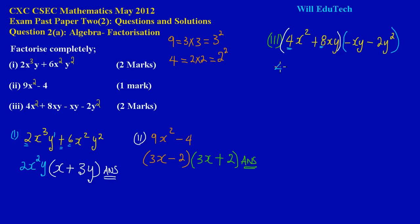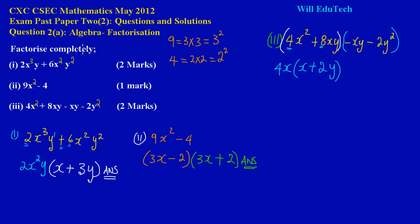I'm going to open a bracket: 4 into 4 cancels, x into x² leaves x, so I have x there. Then 4 into 8 goes 2 times, and x cancels x leaving me with y. So the first group gives me 4x(x + 2y). I notice there is a negative sign before the second group, so I'm going to bring that down and ask myself what is common to those two terms.